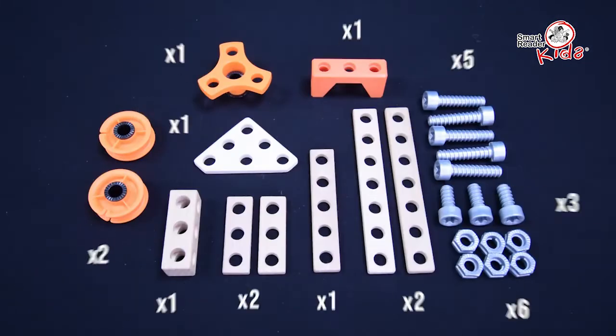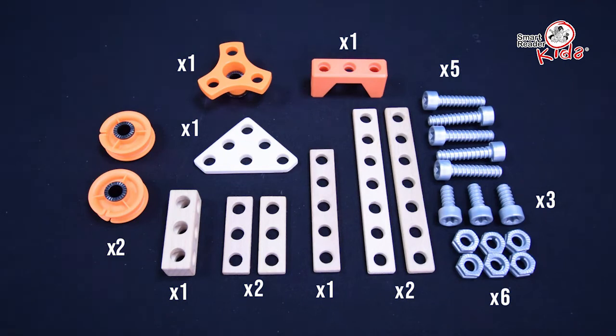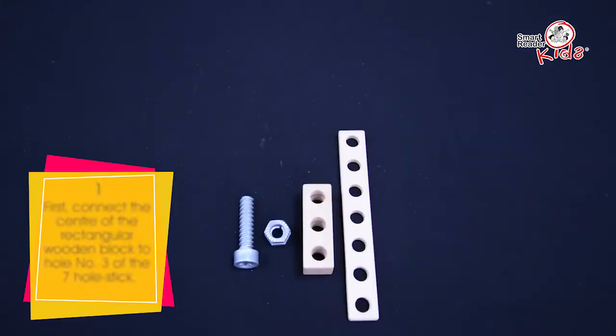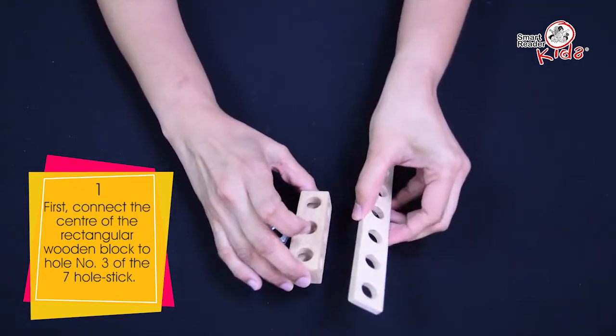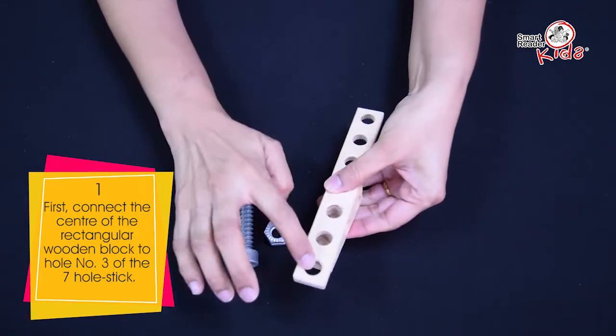Experiment Kit 4 Aeroplane Items needed. First, connect the center of the rectangular wooden block to hole number 3 of the 7-hole stick.